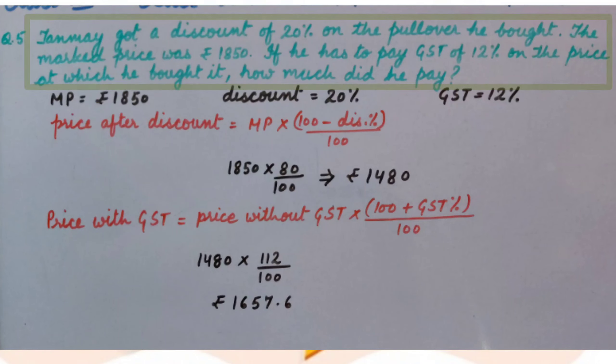Tanmay got a discount of 20% on the pullover he bought. The marked price was Rs. 1850. If he has to pay GST of 12% on the price at which he bought it, how much did he pay?